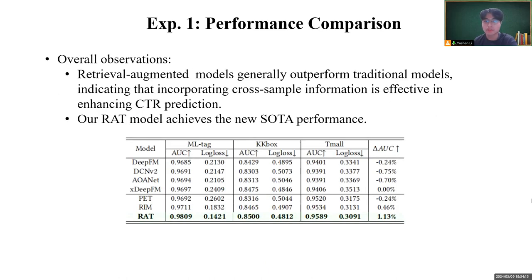We report the model performance in this table. We can find all RAT methods generally outperform traditional methods, indicating that incorporating cross-sample information is effective in enhancing CTR prediction, and our RAT model achieves the SOTA performance.